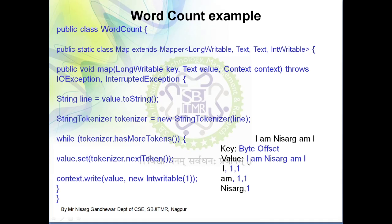Taking the mapper output as input to the reducer: for key 'I', the list is {1, 1}. The for loop iterates — first sum becomes 1, then sum becomes 2. So the output is (I, 2). For key 'am', the list also has two occurrences, so sum equals 2 and output is (am, 2). For key 'Nisarga', only one occurrence is present, so sum equals 1 and output is (Nisarga, 1).